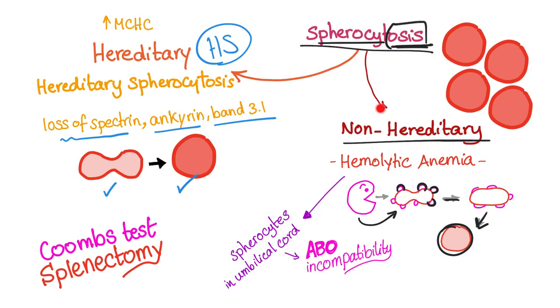Most cases of spherocytosis will be hemolytic anemia, not hereditary spherocytosis. If you find spherocytes in the umbilical cord blood, this indicates ABO incompatibility, which causes hemolytic disease of the newborn — and of course, that is hemolytic anemia.